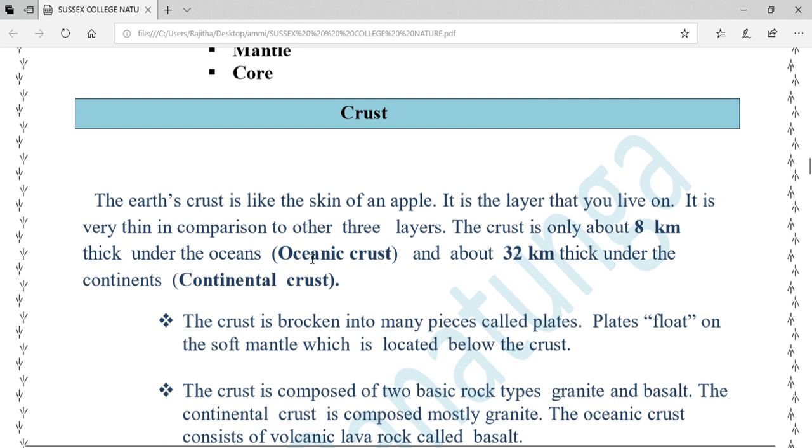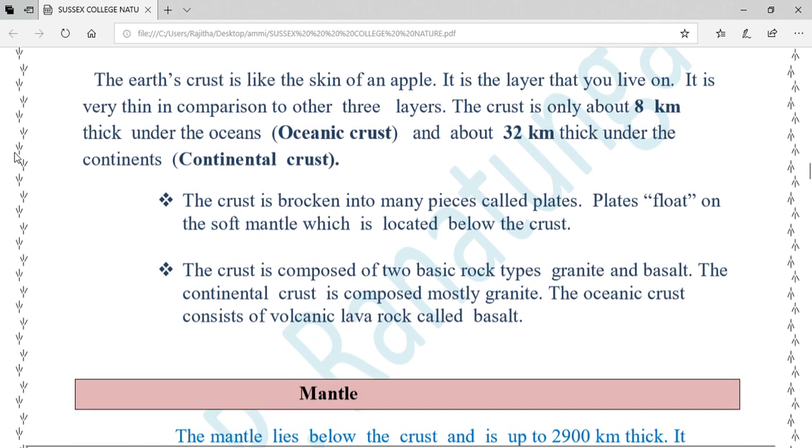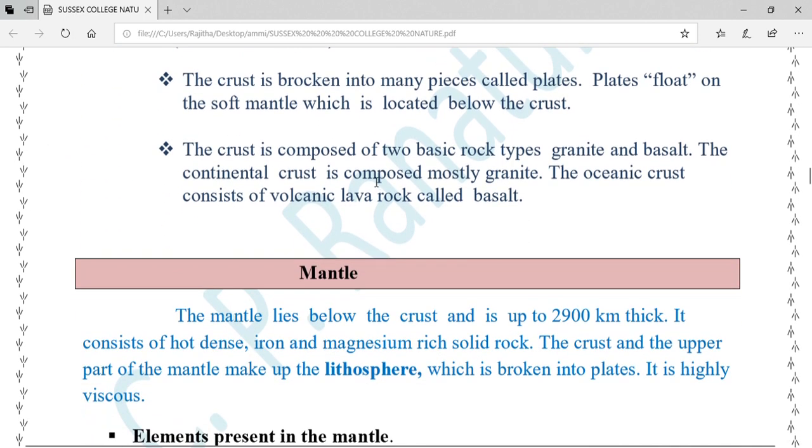The crust is only about eight kilometers thick under the oceans (oceanic crust) and about 32 kilometers thick under the continents (continental crust). The crust is broken into many pieces called plates. Plates float on the soft mantle which is located below the crust.